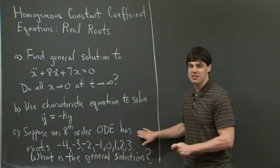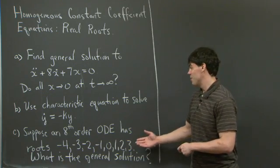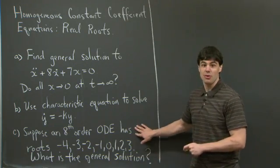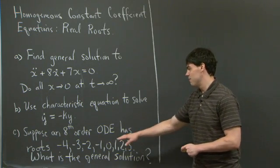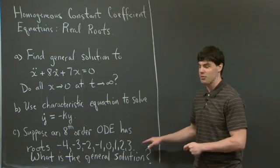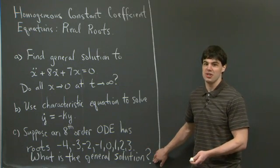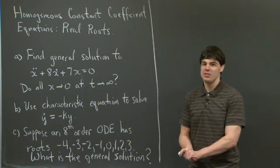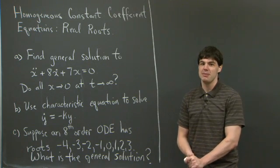Lastly, we're told that we have 8 roots to an 8th order differential equation: negative 4, negative 3, negative 2, negative 1, 0, 1, 2, and 3. And we're asked, what is the general solution? So why don't you take a moment and try and work these problems out, and I'll be back in a minute.